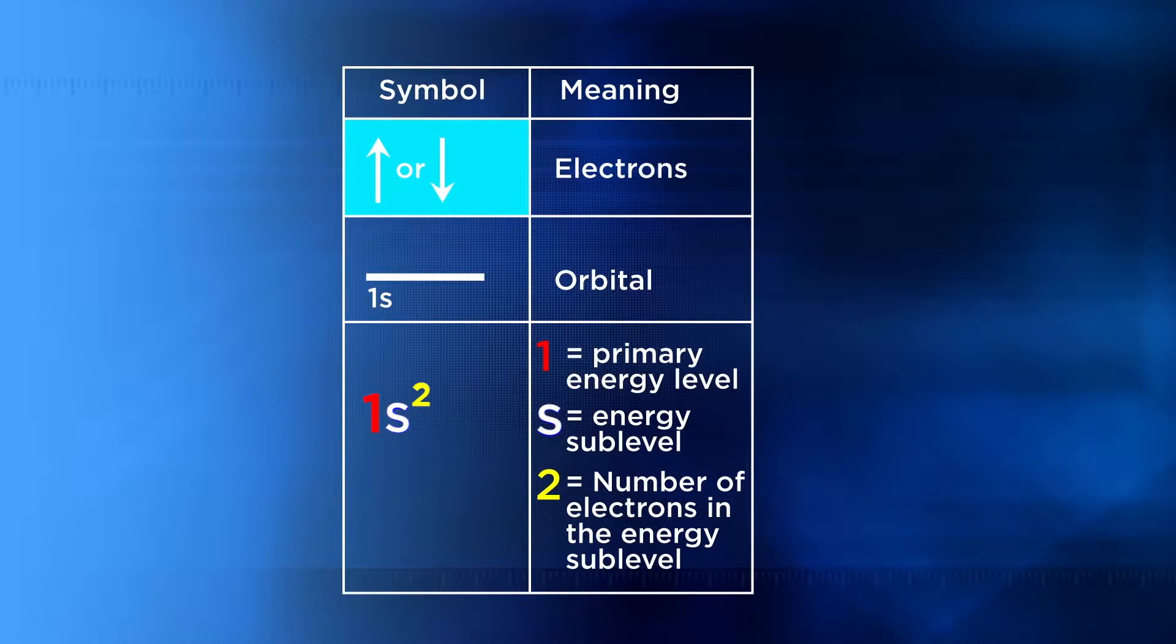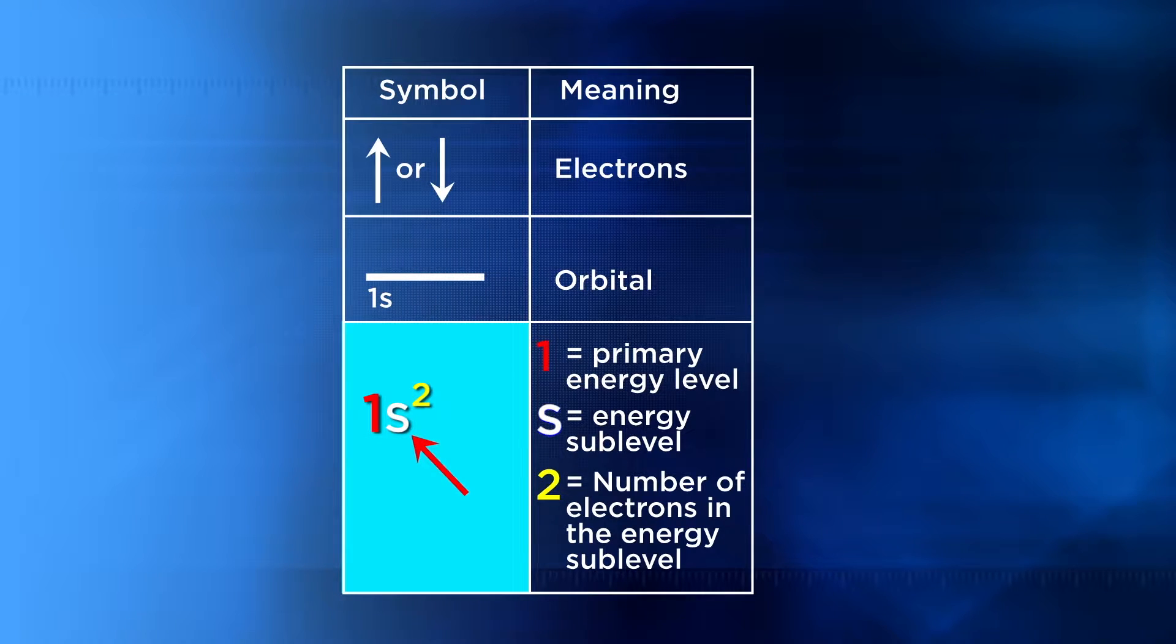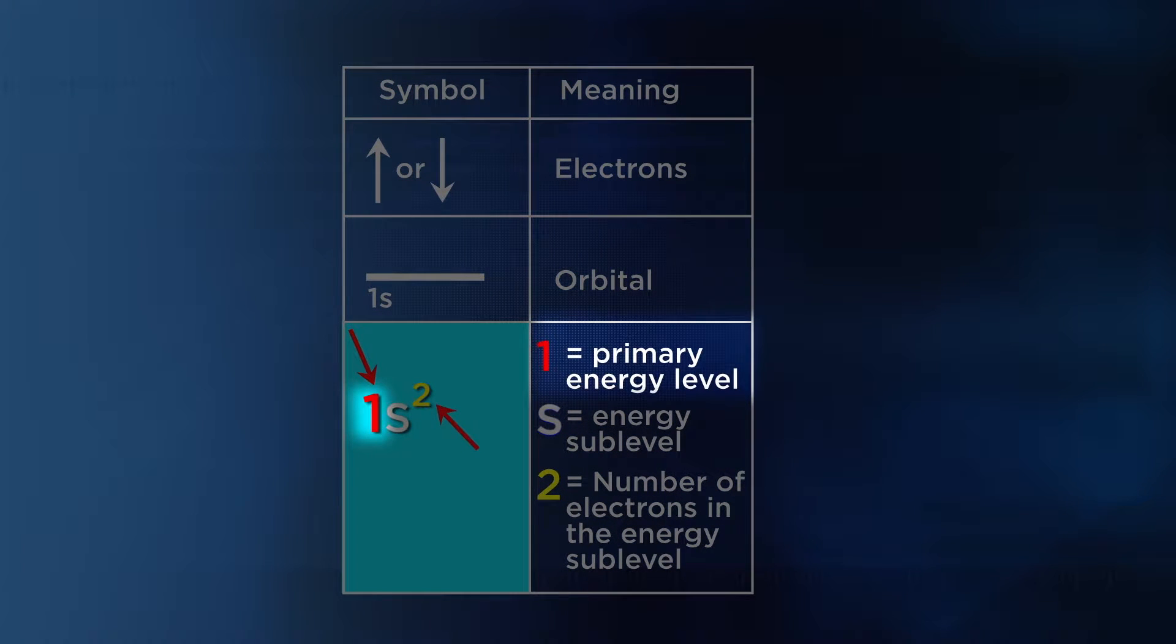Arrows are used as symbols for electrons. Lines under the arrows represent the orbital holding the electron. Letters combined with numbers represent energy sublevels within the primary energy levels. And look for two types of numbers: coefficients, which tell us how many energy levels an atom has, and exponents, which show us how many electrons are in a particular energy sublevel.